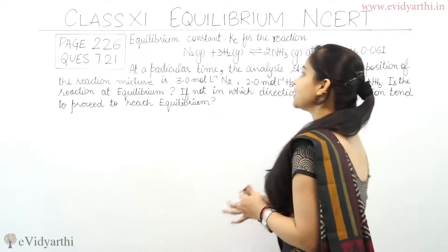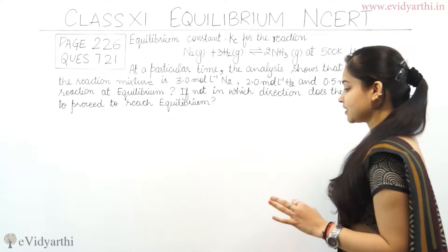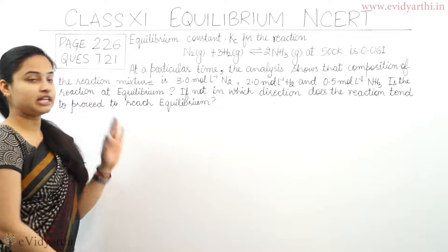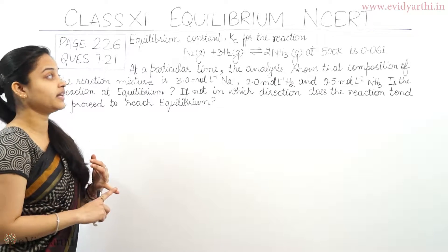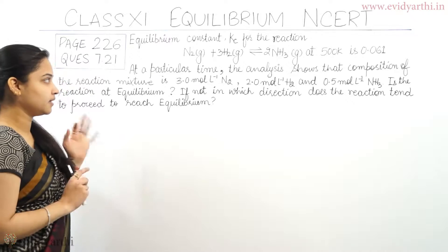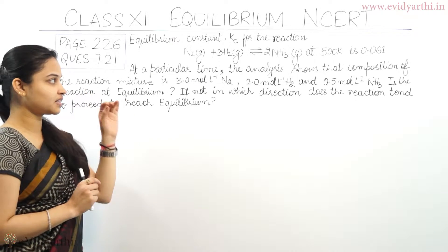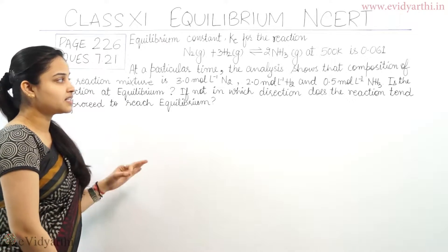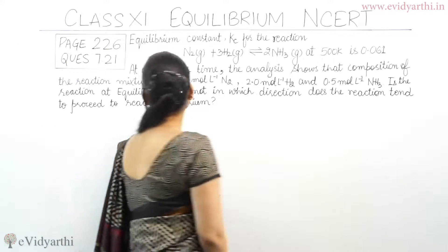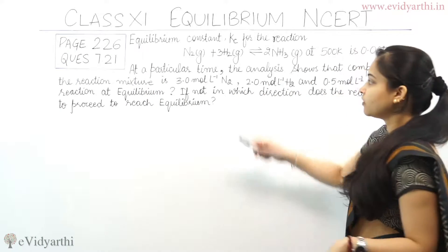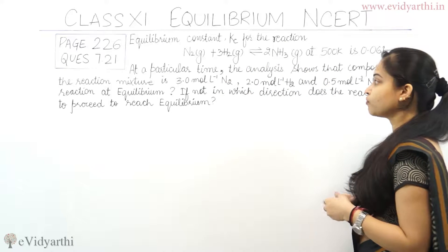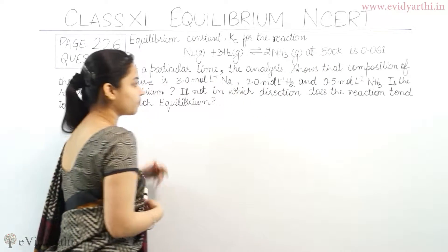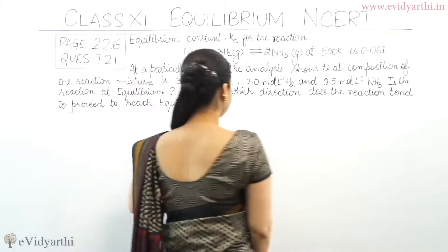So have a look at the question. The question is: the equilibrium constant Kc for the reaction N2 + 3H2 ⇌ 2NH3 at 500 Kelvin is 0.061. At a particular time, the analysis shows that the composition of the reaction mixture is 3.0 mol/L of N2, 2.0 mol/L of H2, and 0.5 mol/L of ammonia. Is the reaction at equilibrium?